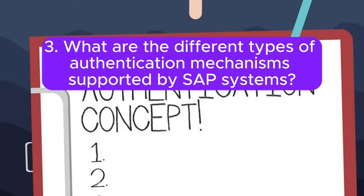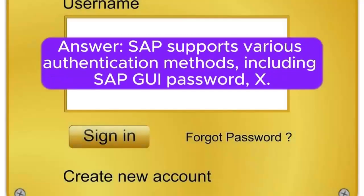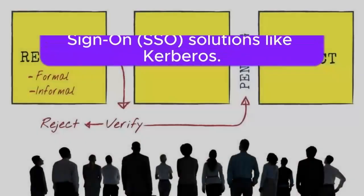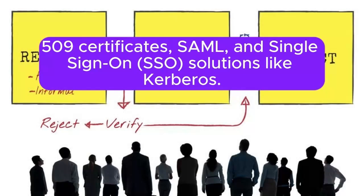Question 3: What are the different types of authentication mechanisms supported by SAP systems? Answer: SAP supports various authentication methods, including SAP GUI password, X.509 certificates, SAML, and single sign-on (SSO) solutions like Kerberos.